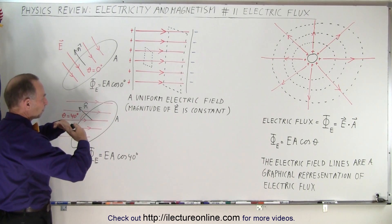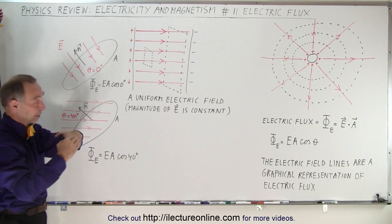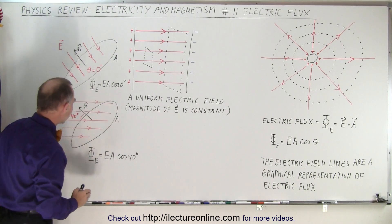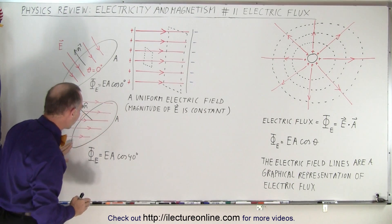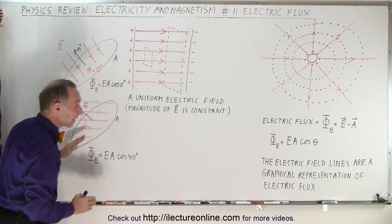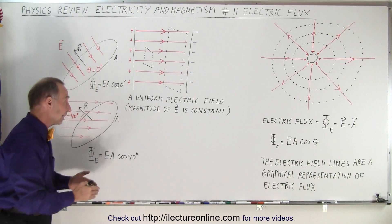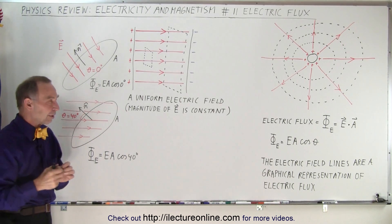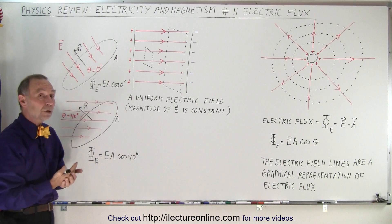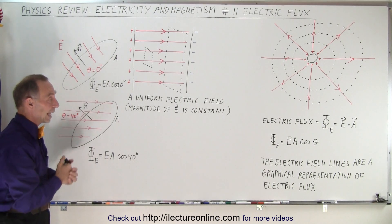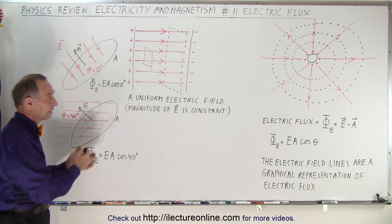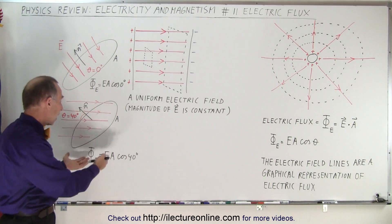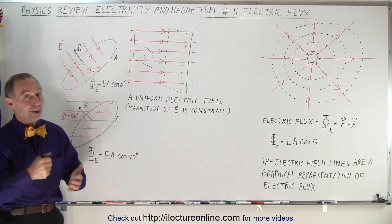If it's parallel to the normal, it's maximum — cosine of zero is one. And if it's perpendicular, meaning the electric field lines are parallel to the surface of the area, then none of them will go through the area and the flux will be zero through that surface. Those are concepts that are very important, especially later on when we talk about Gauss's law. But here is just the basic concept of what flux is and how to calculate it. And that is how it's done.